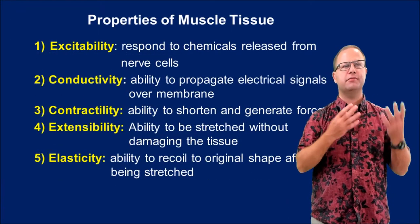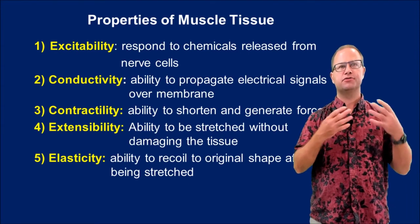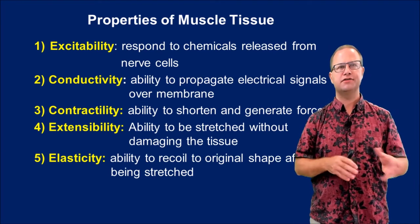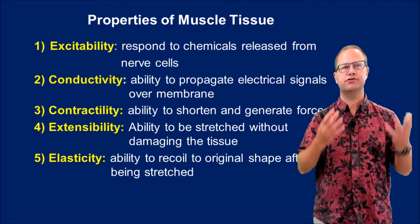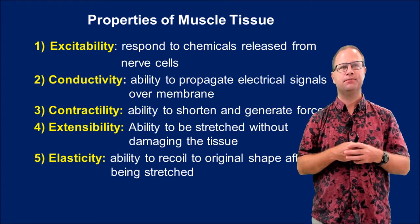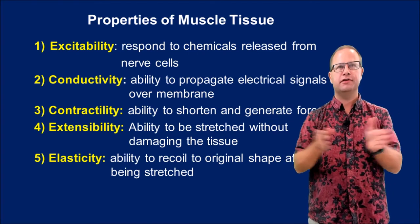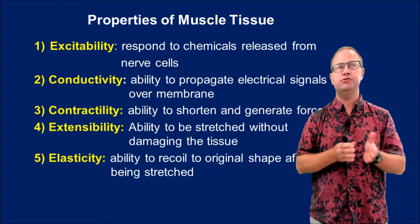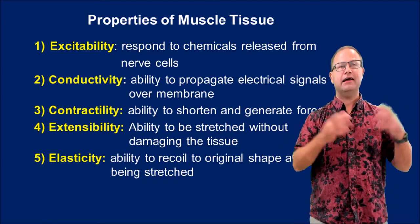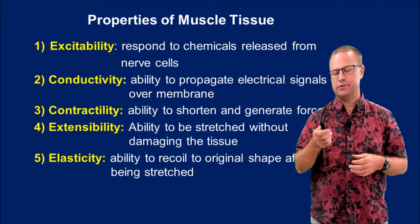Now let's go over some of the properties of muscle tissue. First, muscle tissue is excitable — it responds to chemicals released from our nerve cells. It's also conductive; just like electrical wires, it can propagate electrical charges, and cardiac muscle can even generate electrical charges. Muscular tissue is also contractile — it forcefully shortens. Muscle tissue can also extend and stretch back to its original shape, although not forcefully. And finally, it's elastic — we can stretch muscle tissue and it snaps back to its original shape.